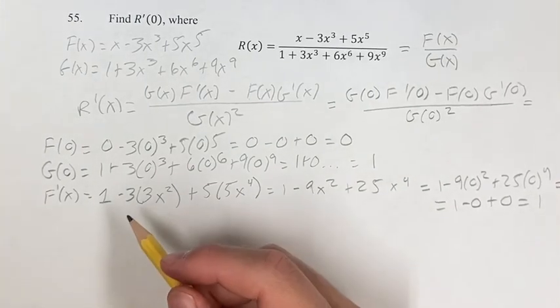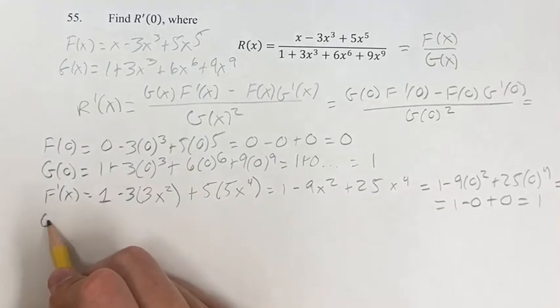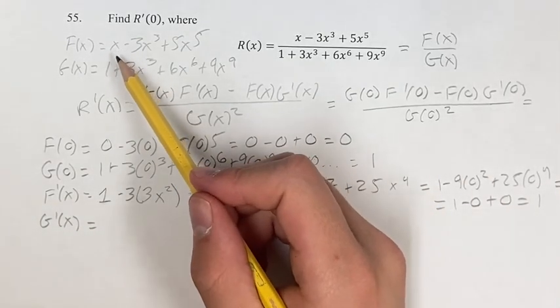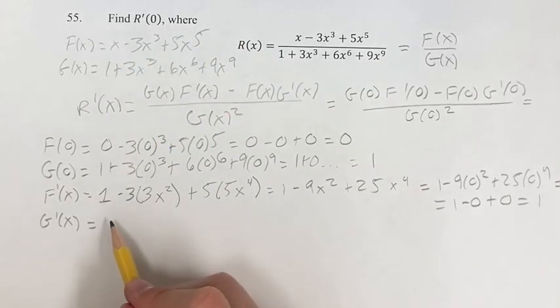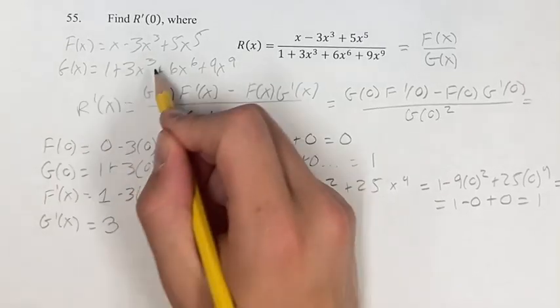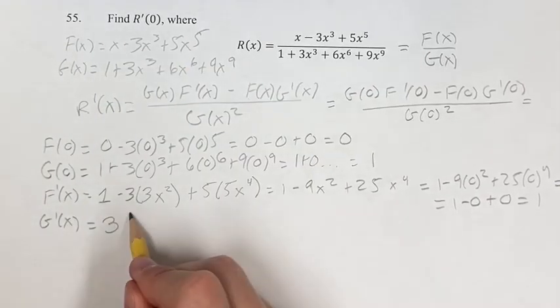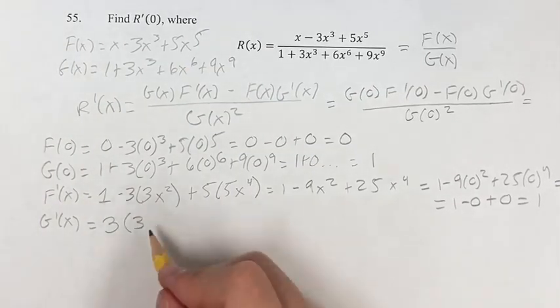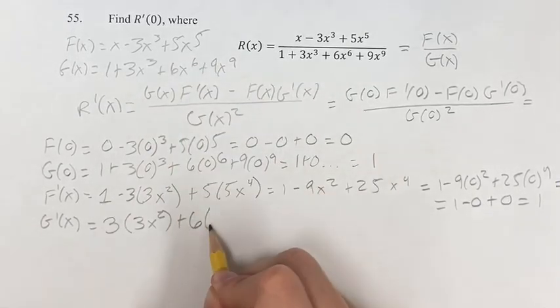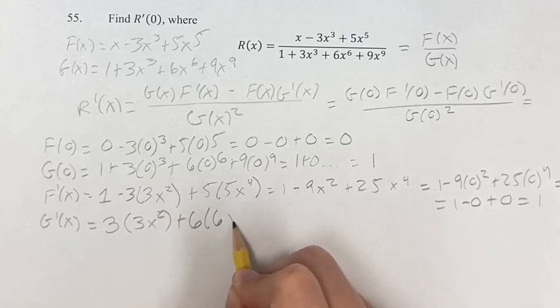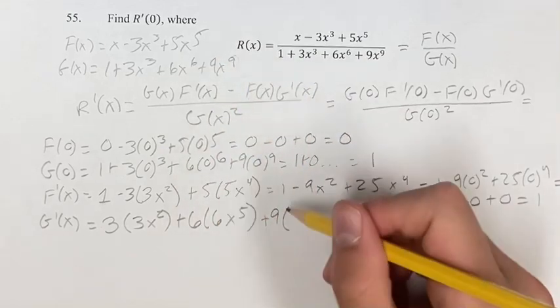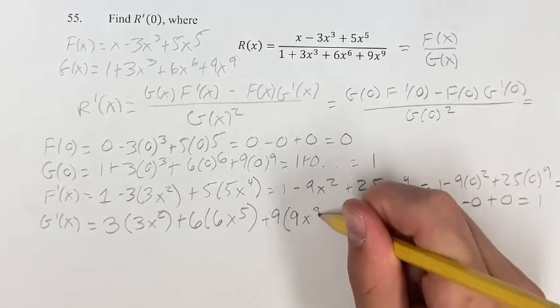Continuing on, the last thing we need to find is the derivative of g, which is going to be the derivative of 1 is 0, since it's a constant, so we can just ignore that 0, plus 3, derivative of x cubed, bring down your 3, lower your exponent by 1, plus 6, bring down the exponent, lower your exponent by 1, plus 9, bring down your exponent, lower your exponent by 1.